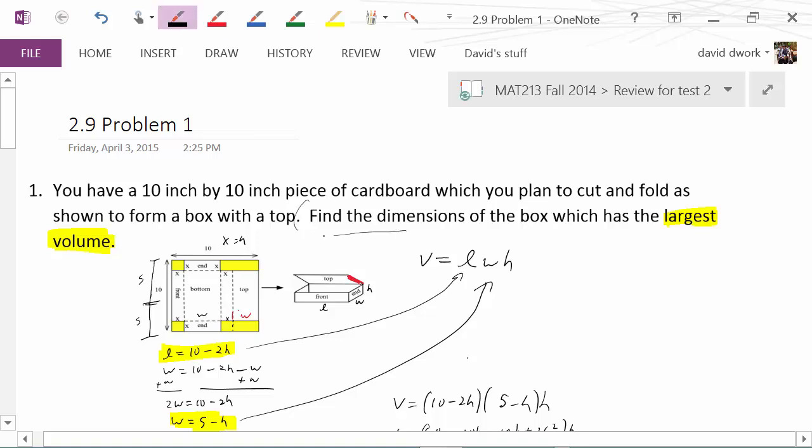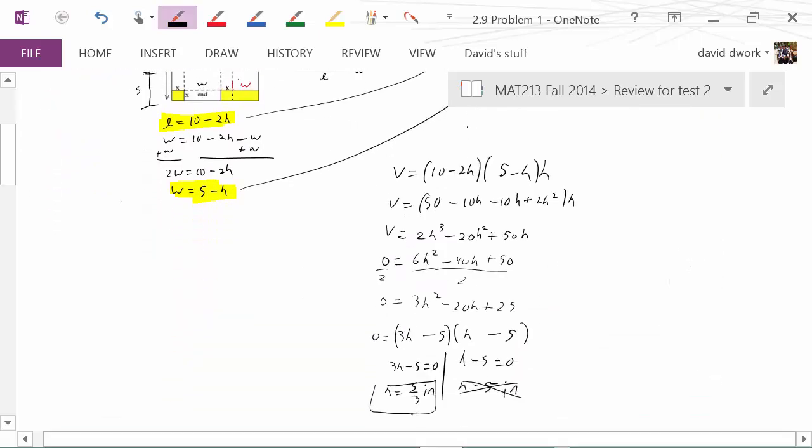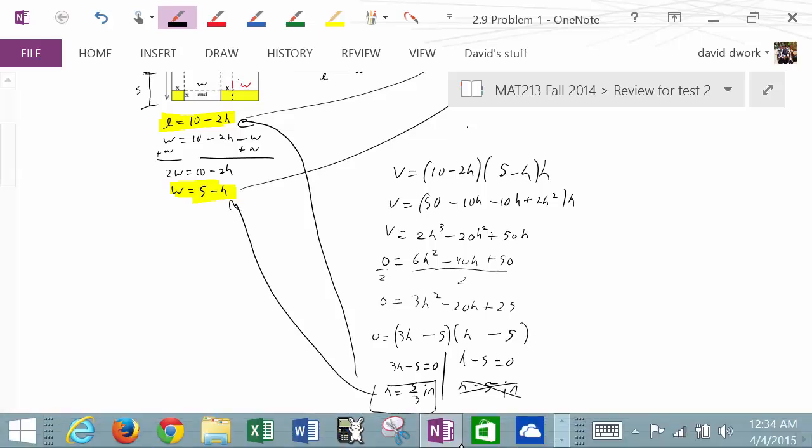Did we find what the problem asked us for? It wants to find the dimensions of the box that has the largest volume, and the dimensions means we need length, width, and height. Right now we just have the height, so what I can do is go back and get my width and length just by subbing h in for each of those parts, which I will leave up to you. But that's how you do the problem. Hope it helps.